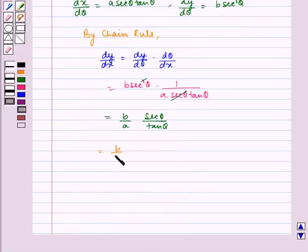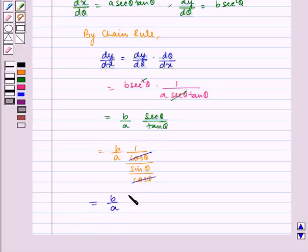Which is equal to b by a. Sec theta can be written as 1 by cos theta and tan theta can be written as sin theta by cos theta. So we see here cos theta and cos theta gets cancelled, so we are left with b by a 1 by sin theta.